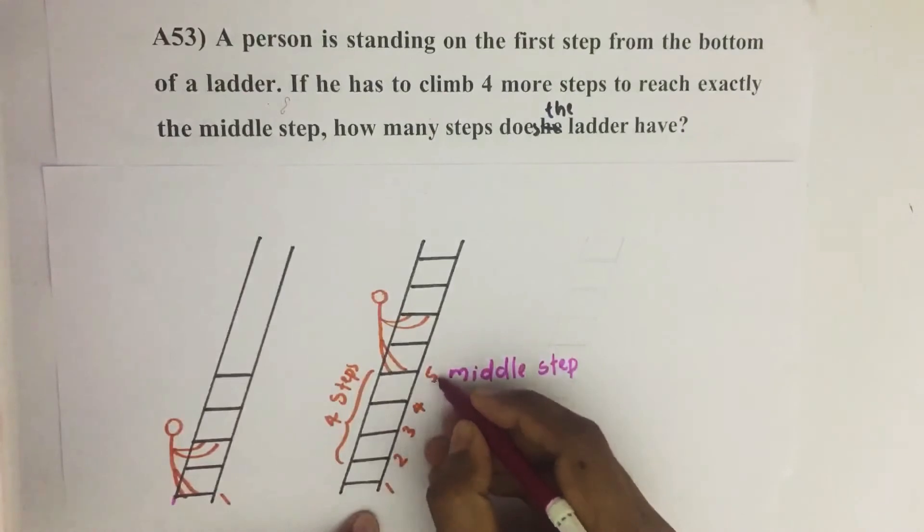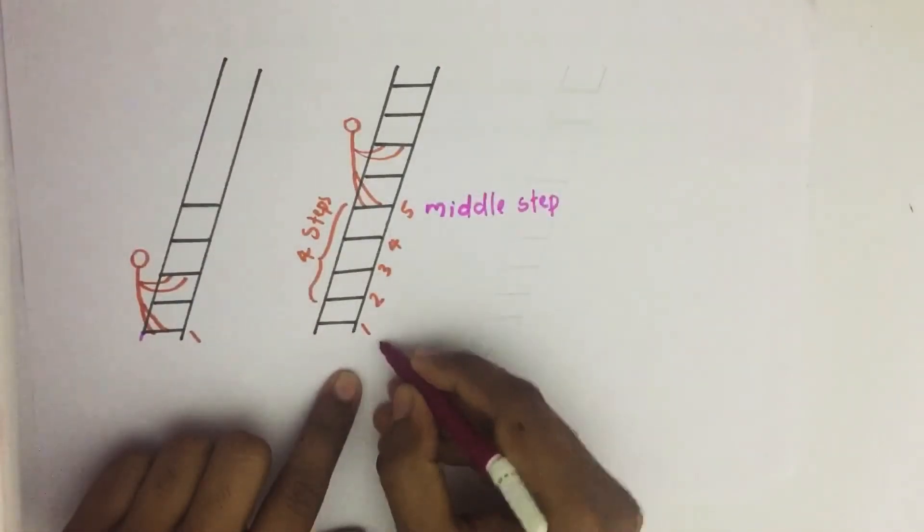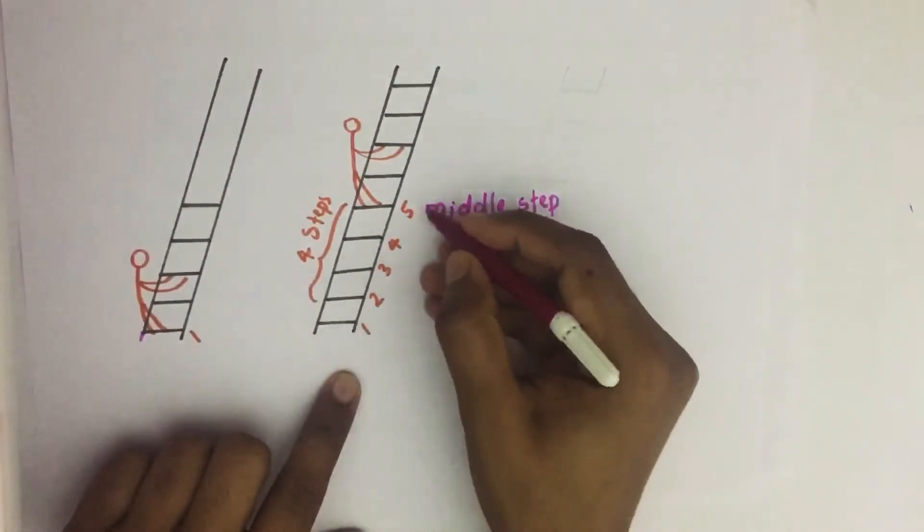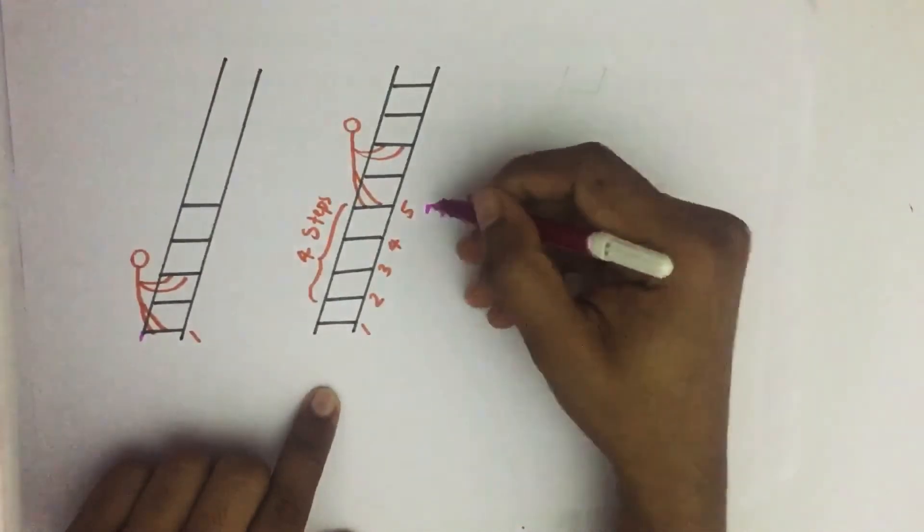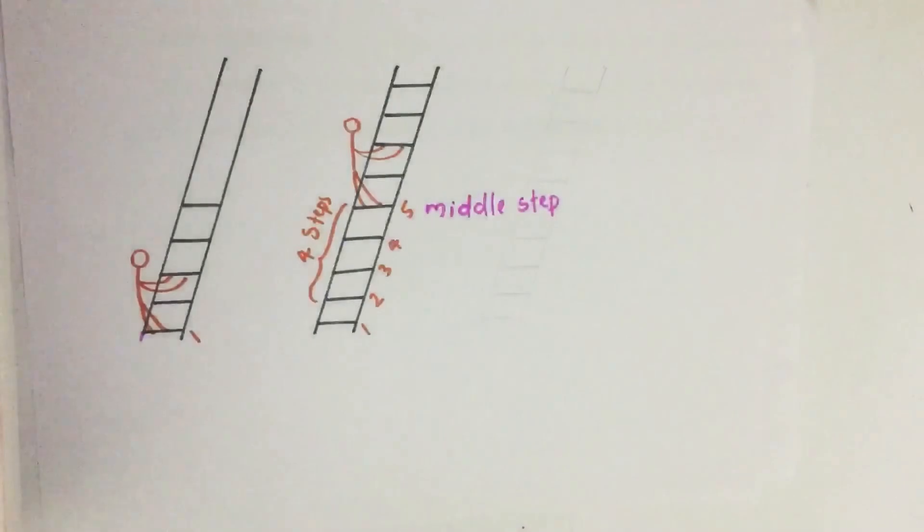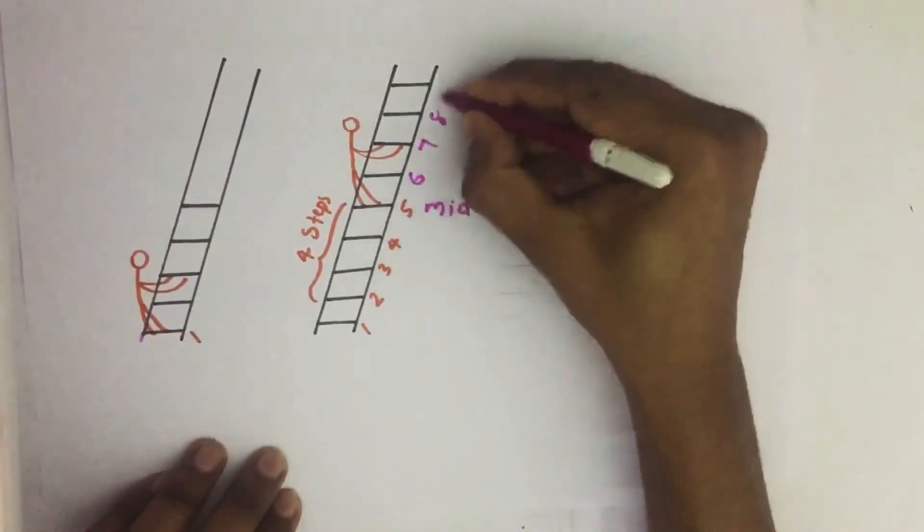If fifth step is the middle step, then here we can see there are four steps below the middle step. That means there will be four more steps after this middle step. So four more steps: six, seven, eight, nine.